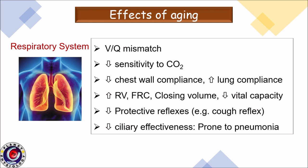In the respiratory system, there is ventilation-perfusion mismatch, decreased sensitivity to carbon dioxide, decreased chest wall compliance but increased lung compliance. Various lung volumes change: residual volume, functional residual capacity, and closing volume all increase, while vital capacity decreases. Various protective reflexes also decrease — for example, the cough reflex — and cilia lose effectiveness over time, making the elderly population prone to pneumonia.